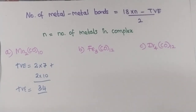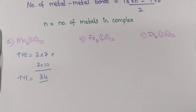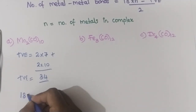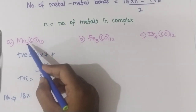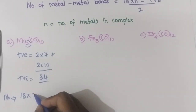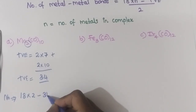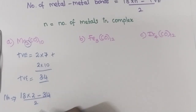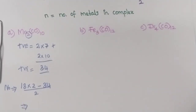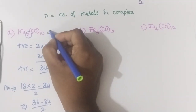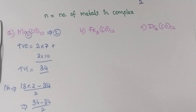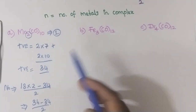The total valence electron is 34. Now, to find out the number of metal-metal bonds: 18 × N minus total valence electron divided by 2. The number of metal atoms present is 2, so: (18 × 2 − 34) / 2 = (36 − 34) / 2 = 2 / 2 = 1.